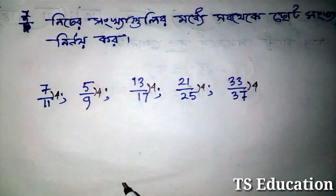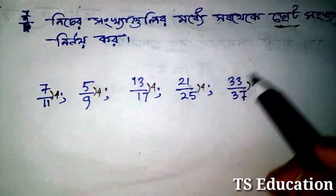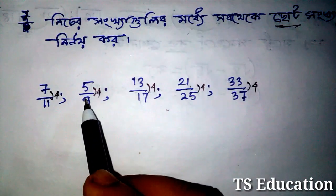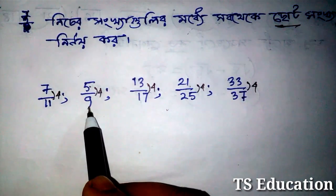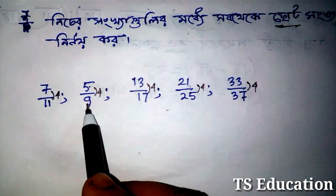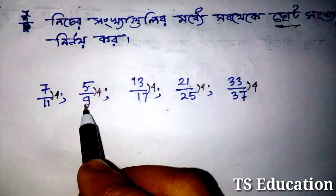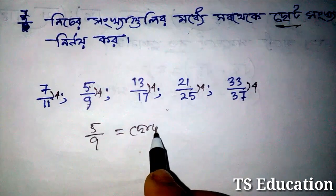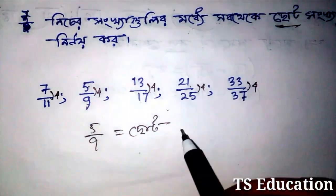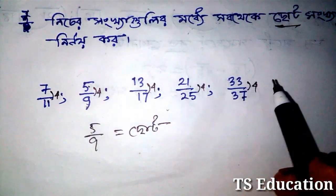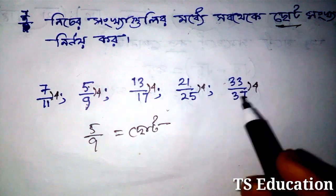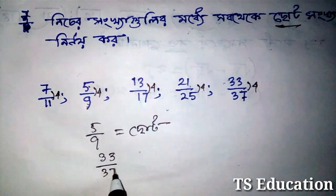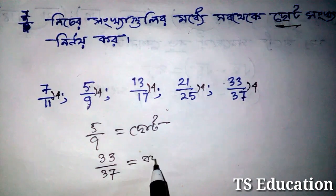Everything we will talk about is what the subject is: 1, 1, 2, 3, 3, 4, 4, 3, 2, 3, 4 — 23.30, 23.30, 18, 18, 18, 18.